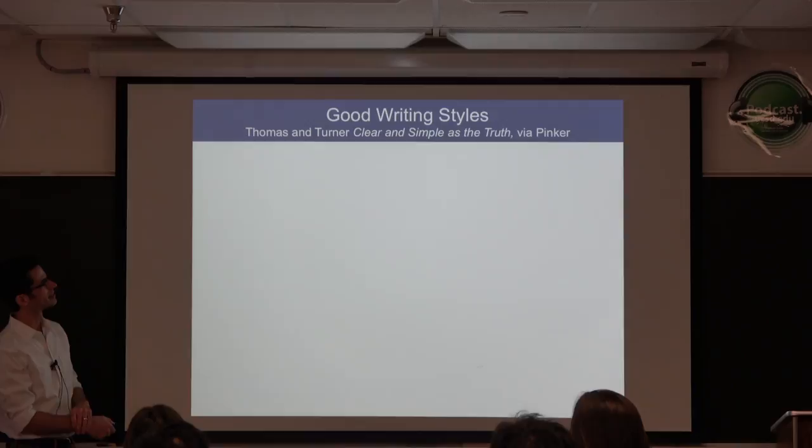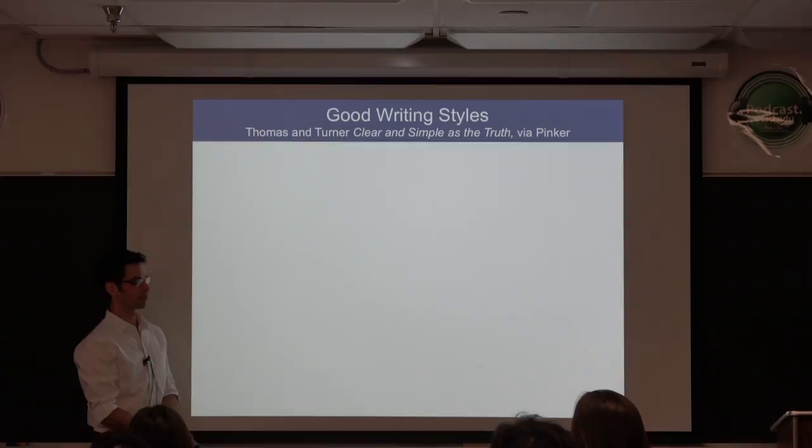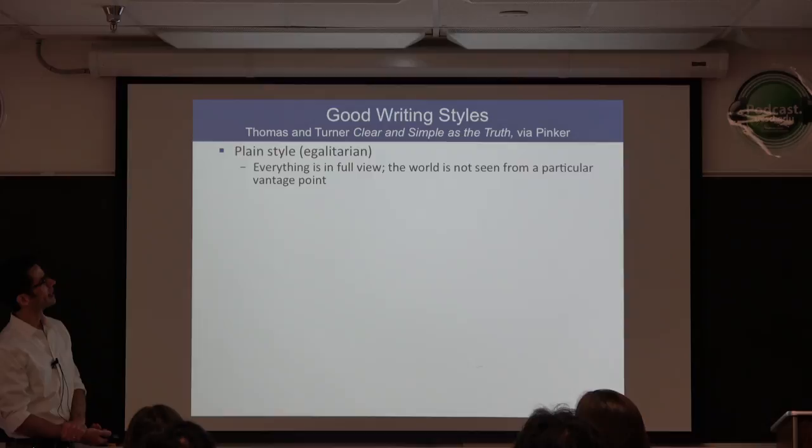There's a book called Clear and Simple as the Truth by Thomas and Turner, which I found through Steven Pinker's The Sense of Style — the best book on nonfiction writing I've ever seen. There's a plain style, which is egalitarian — everything is in full view, the world is not seen from a particular vantage point. An example is 'the early bird gets the worm.'